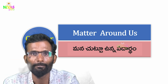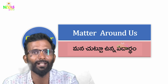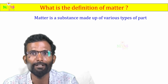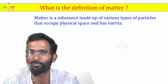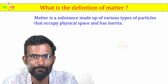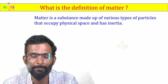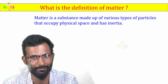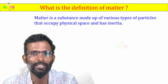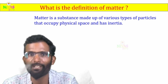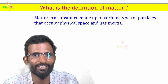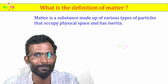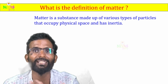First chapter: Matter Around Us. What is the definition of matter? Matter is a substance made up of various types of particles that occupy physical space and has inertia. Matter is made up of different types of particles. It occupies space and has weight. That is called matter.